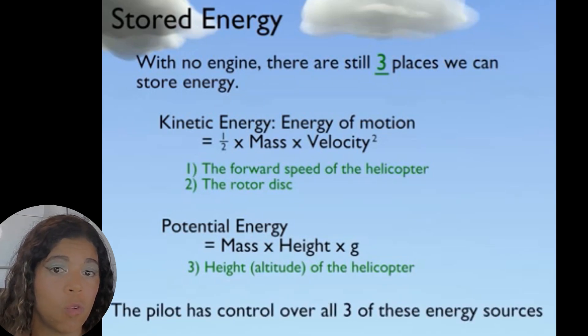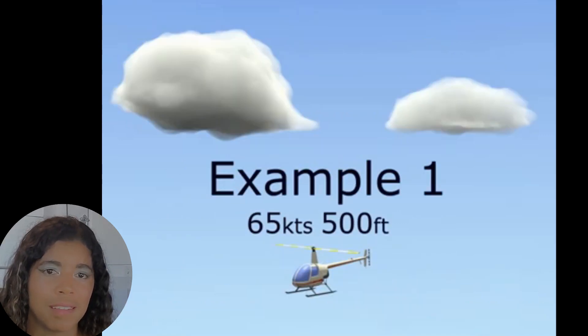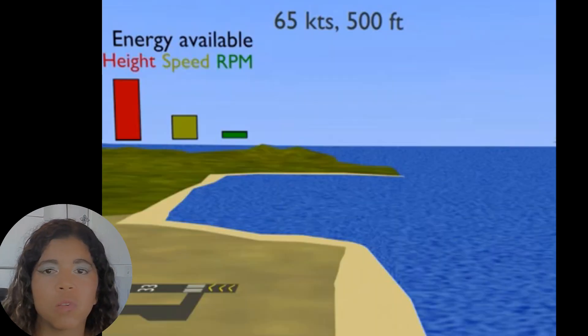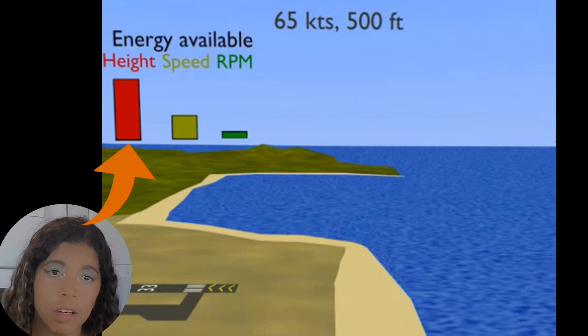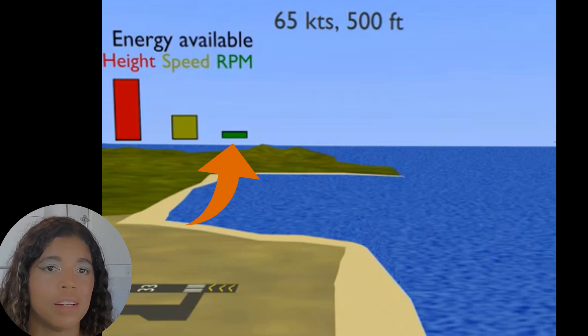A pilot actually has control over all three of these energy sources by choosing where to fly and how fast to fly. Let's take a look at an example of a pilot flying at 65 knots and 500 feet. Now if you take a look here I've made these sort of buckets of energy: energy due to height, energy due to speed, and energy due to your RPMs. In the case of an autorotation you must maintain your RPMs in order to have a safe landing.